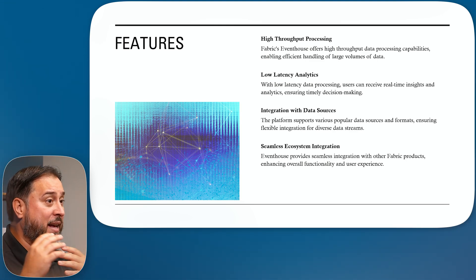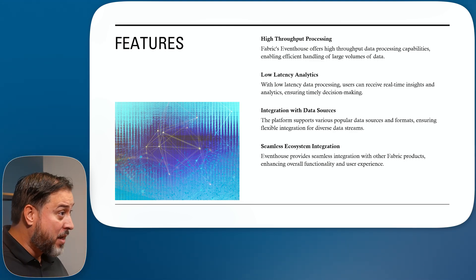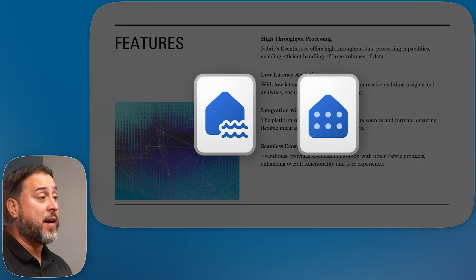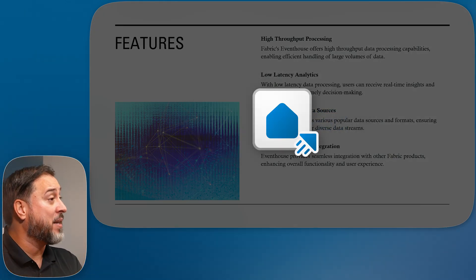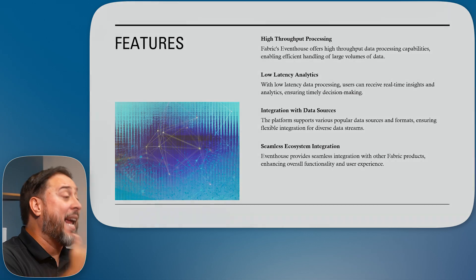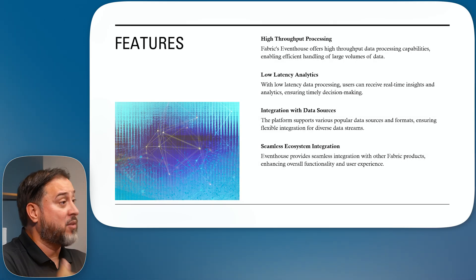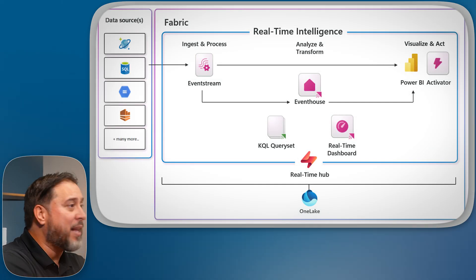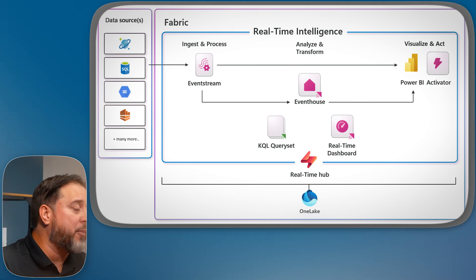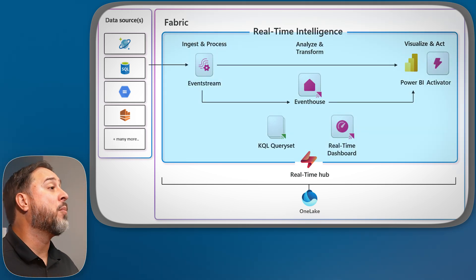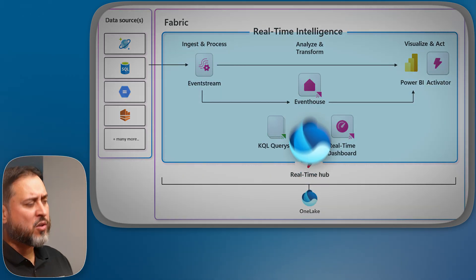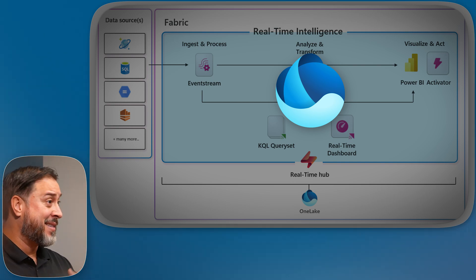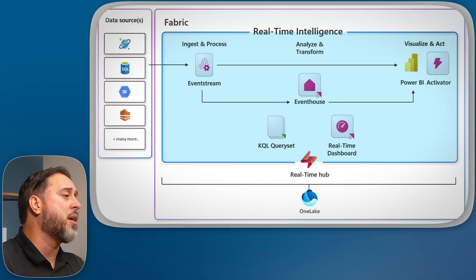Even though this is its own thing — we have a lake house and a warehouse in Fabric, and now an event house as a container for our KQL databases with streaming data going into it — it's still seamlessly integrated with the rest of Fabric through One Lake integration, something you do have to enable. We'll see it automatically turned on when we use the sample data set.